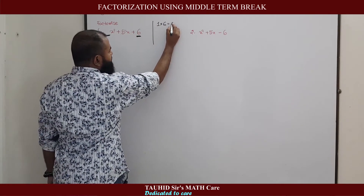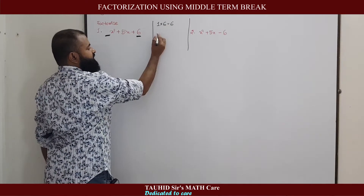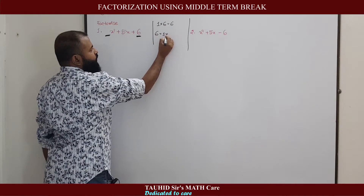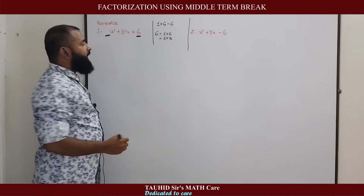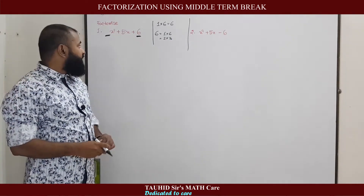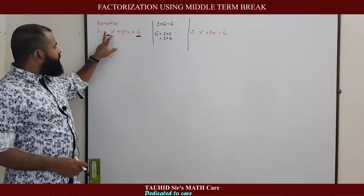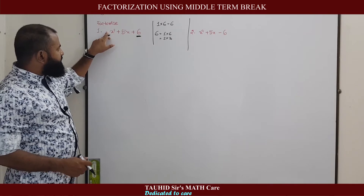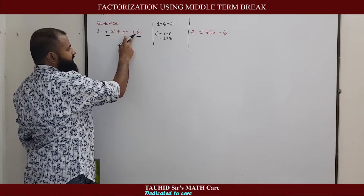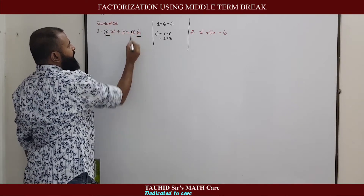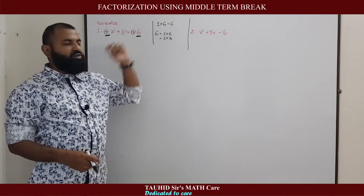So 1 multiplied by 6 equals 6. Now we factorize 6 in all possible ways: we can write 6 as 1×6 or 2×3. Then we check the signs in front of the first term and the third term. Here you can see the sign of x² is positive and the sign of 6 is also positive — both are positive. In this case we will add the factors.